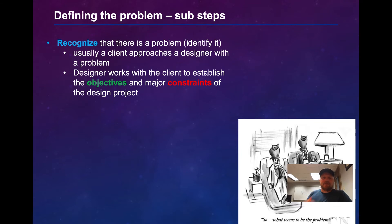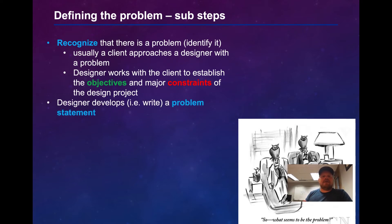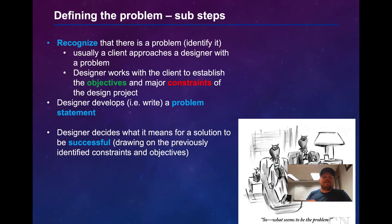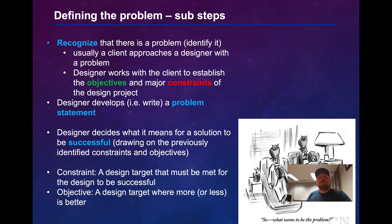Let's drill down on each of those steps. The first is defining the problem. In this step, we recognize that there is a problem and identify how we can address it. Typically the client approaches the designer with a problem, and the designer works with the client to determine what the objectives and major constraints are. The designer then writes a problem statement and determines what it means for the solution to be successful. A constraint is a design target that must be met; an objective is a design target where more — or sometimes less — is better, with a minimum or maximum acceptable threshold.